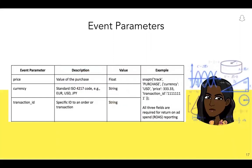Event parameters are additional values you pass to Ads Manager while firing a pixel event. Highlighted in the table are the parameters price, currency, and transaction ID. These three parameters are actually required parameters for the purchase event to be able to report on the value of conversions or the ROAS metric. You will set these parameters to the price of the product being purchased, the currency being used, and the unique transaction ID or order ID associated with the purchase. In the example in the table on the right, you can see that the currency is set to USD, the price is set to 333.33, which is a fractional value, and the transaction ID contains the order ID of the purchase. You can choose to pass in many other parameters with other event types.